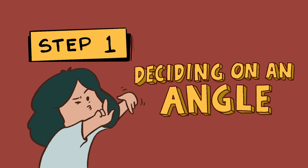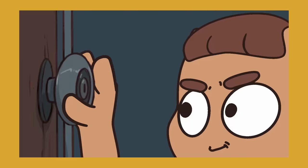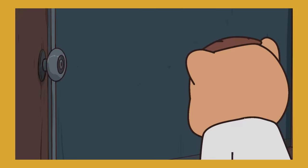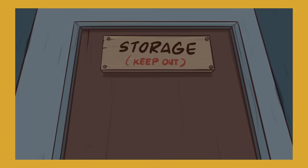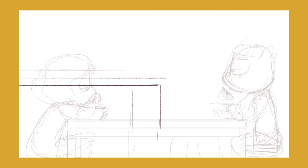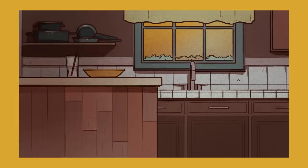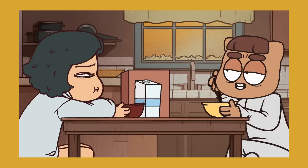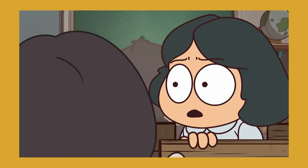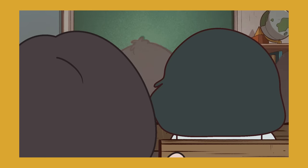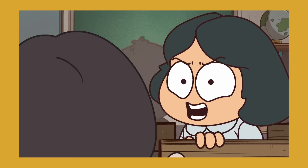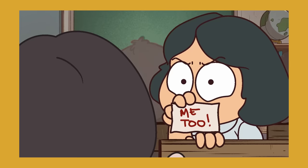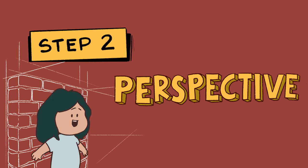Step 1: Deciding on an angle. I always ask myself, what would I like the camera to capture? It can be what the character can see — for example, in this scene the character looked up, so I made the angle upward. It can also be that I want the viewers to focus on two or more characters, like in this scene where it's the best way to show both characters' reactions. And also, if I want one of the characters to be the subject of the scene, I will angle it where it'll show the character more than anything else.